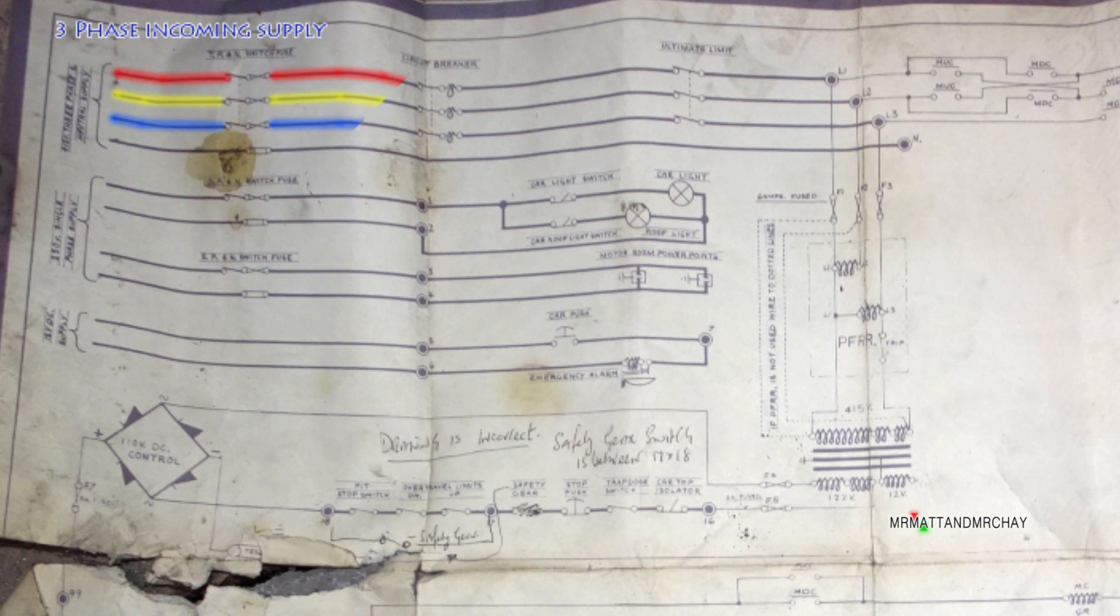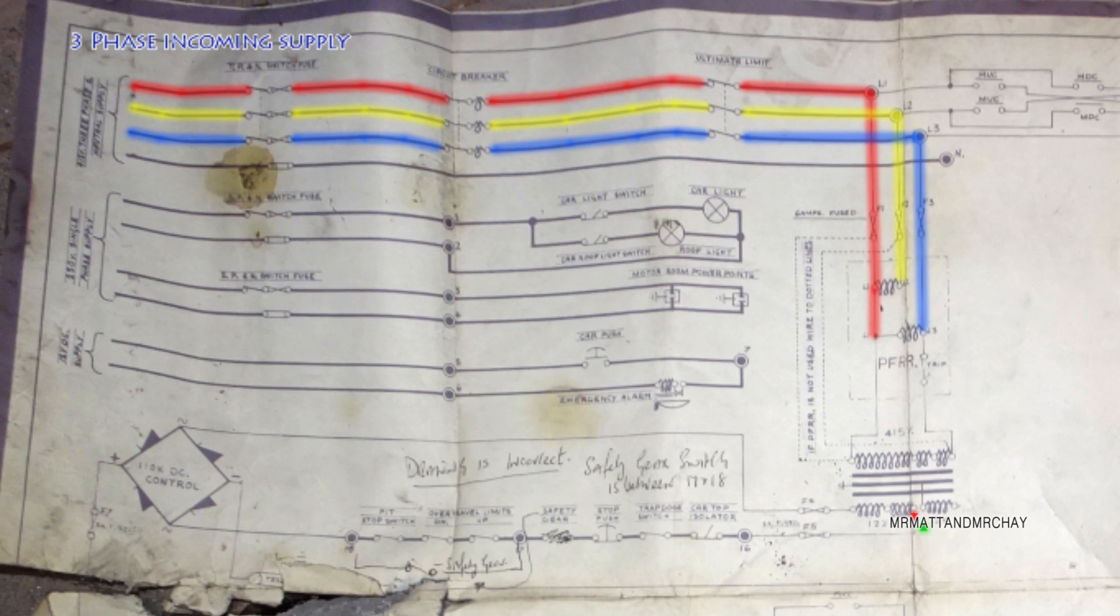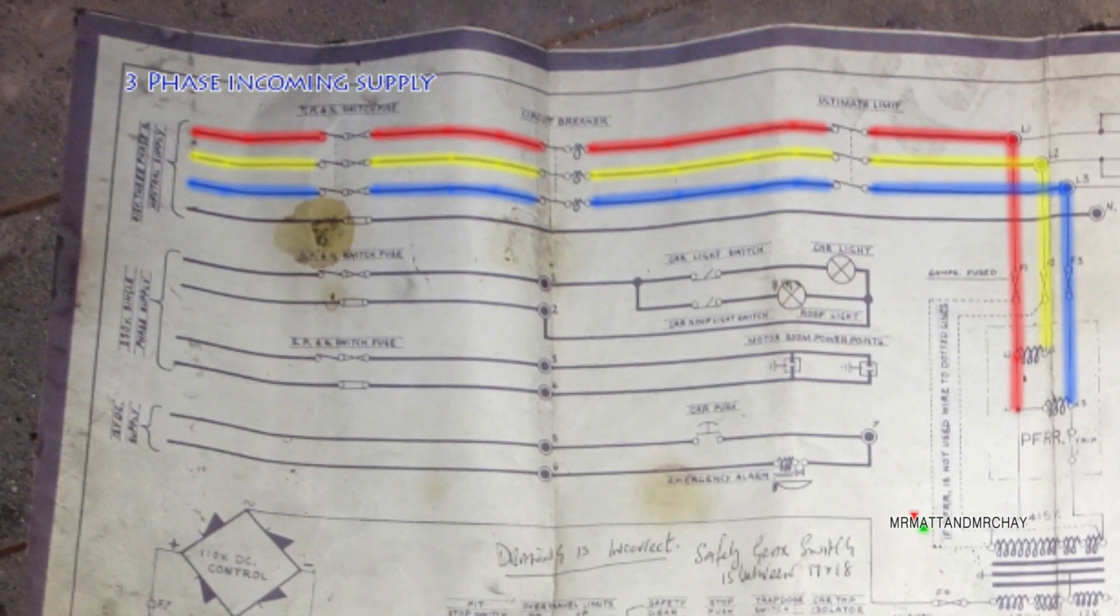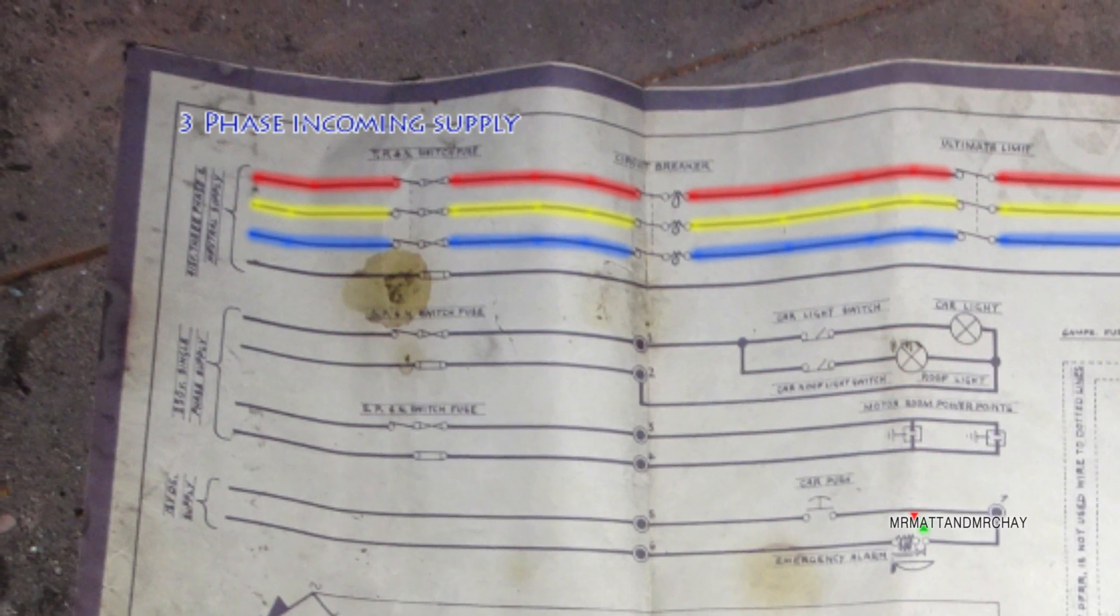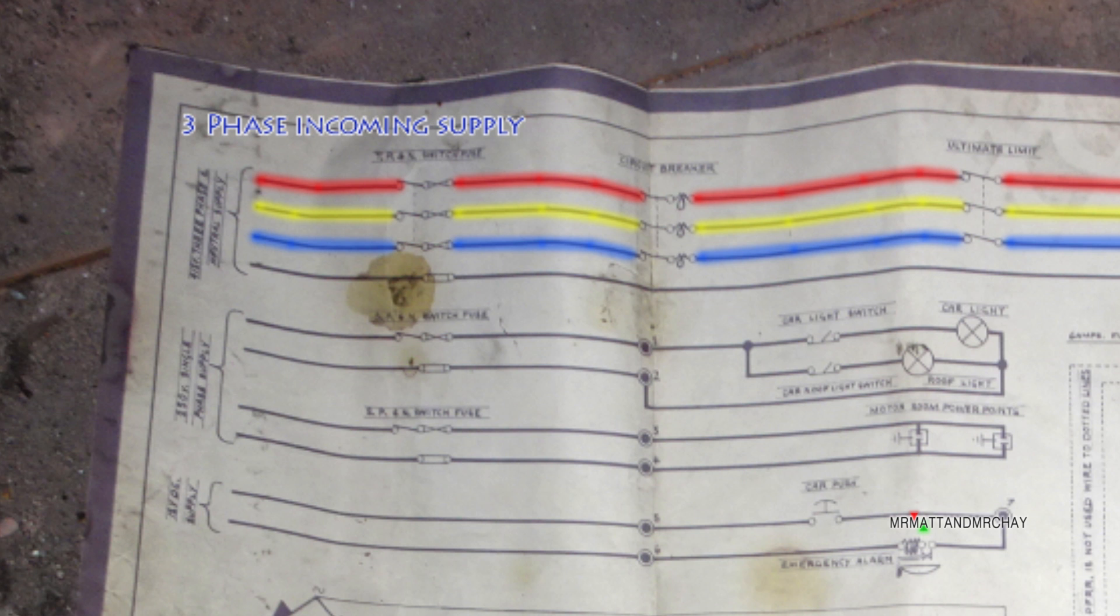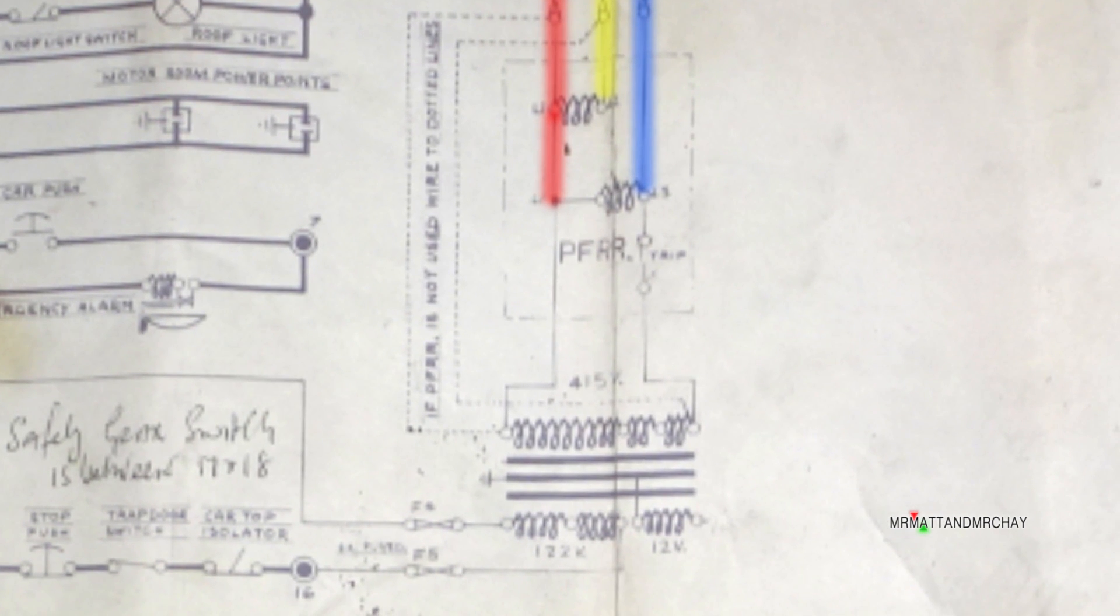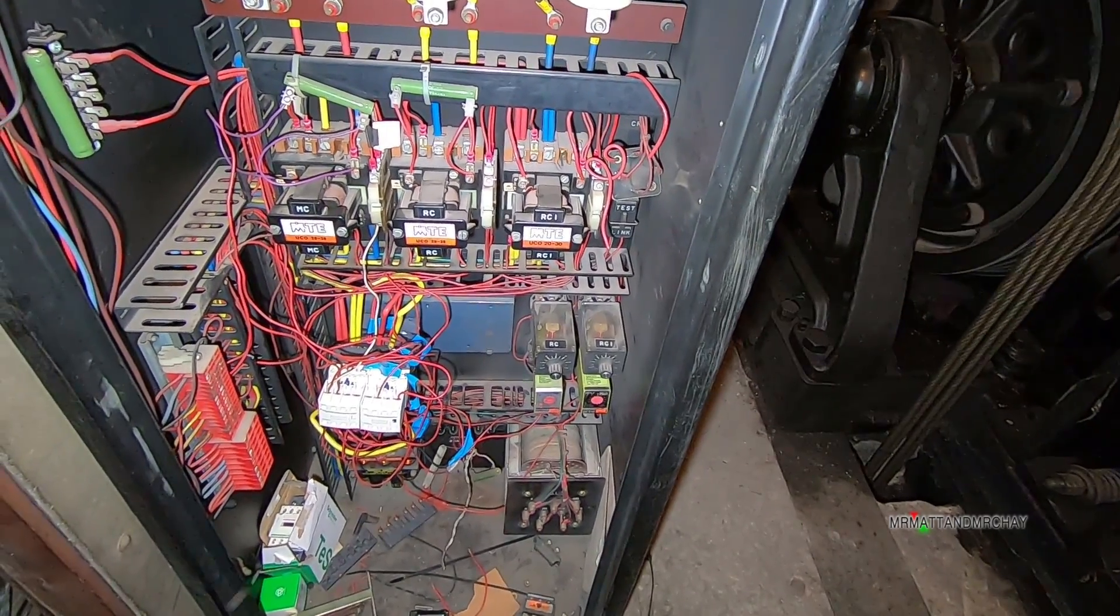Let's start in the top corner, which is where the incoming three phase main supply comes into the cabinet. These phases create voltages totaling 415 volts AC. This is for the motor, which I'm coming back to, and it also feeds this big transformer that provides other voltages to other circuits in the cabinet.